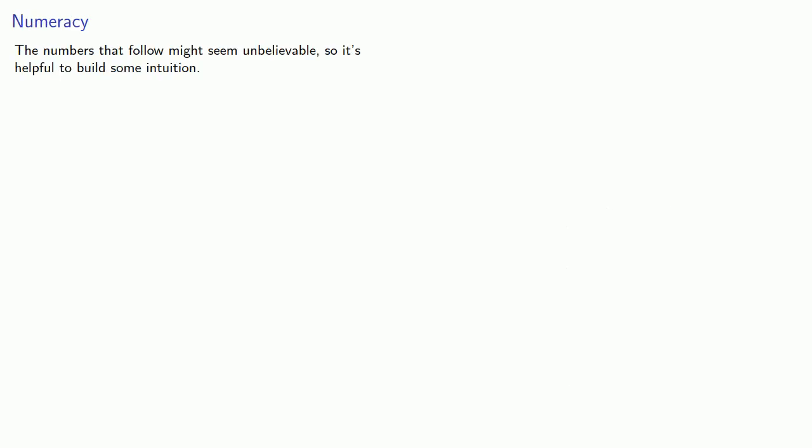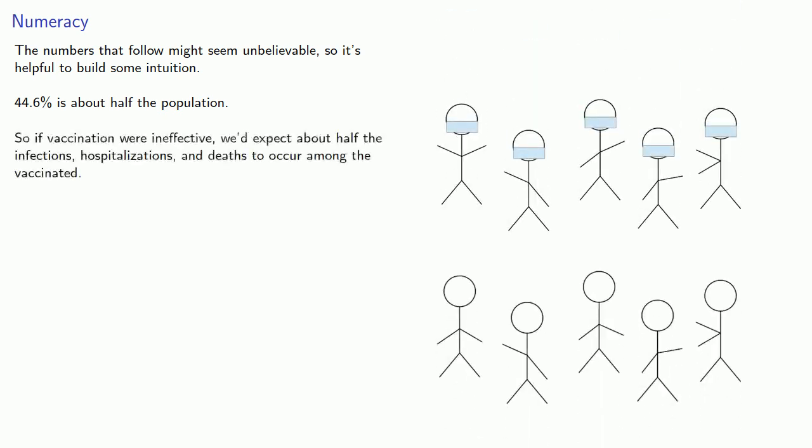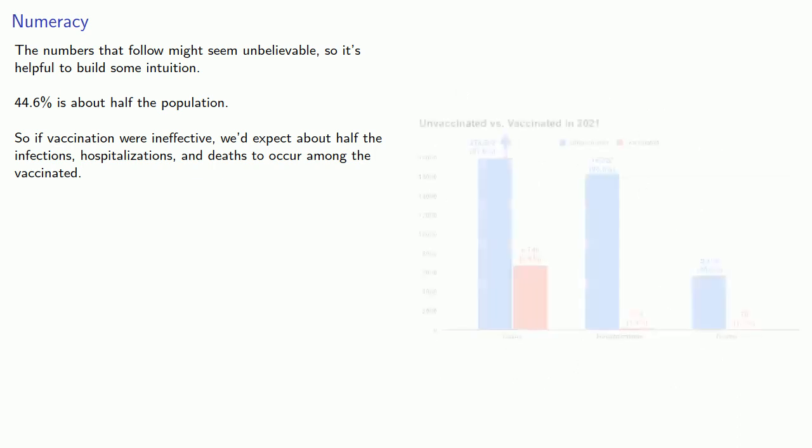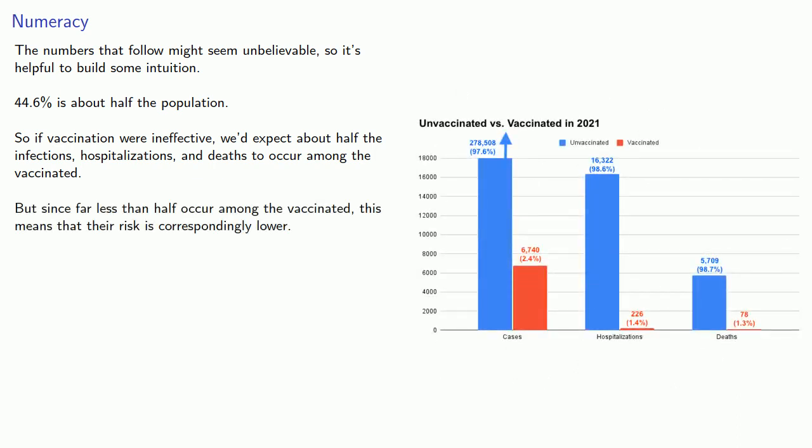Now, if you haven't learned Bayes' Theorem, the numbers that follow might seem unbelievable, so it's helpful to build some intuition. That 44.6% that are vaccinated is about half the population. So if vaccinations were ineffective, we'd expect about half the infections, hospitalizations, and deaths to occur among the vaccinated. But we're not seeing that, and since far less than half occur among the vaccinated, this means that their risk is correspondingly lower, and the risk of the unvaccinated is much greater. Well, let's see what those numbers actually are.